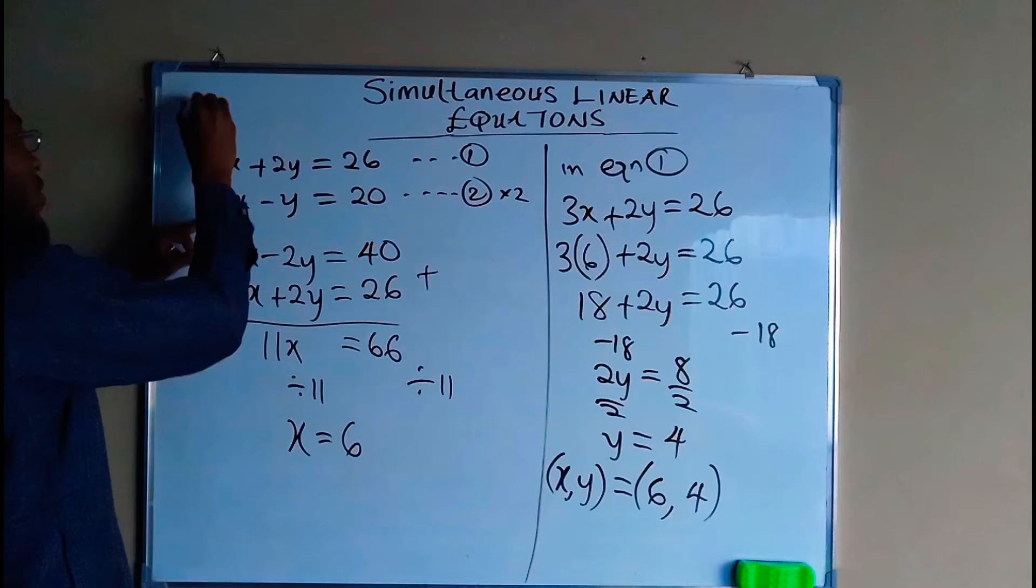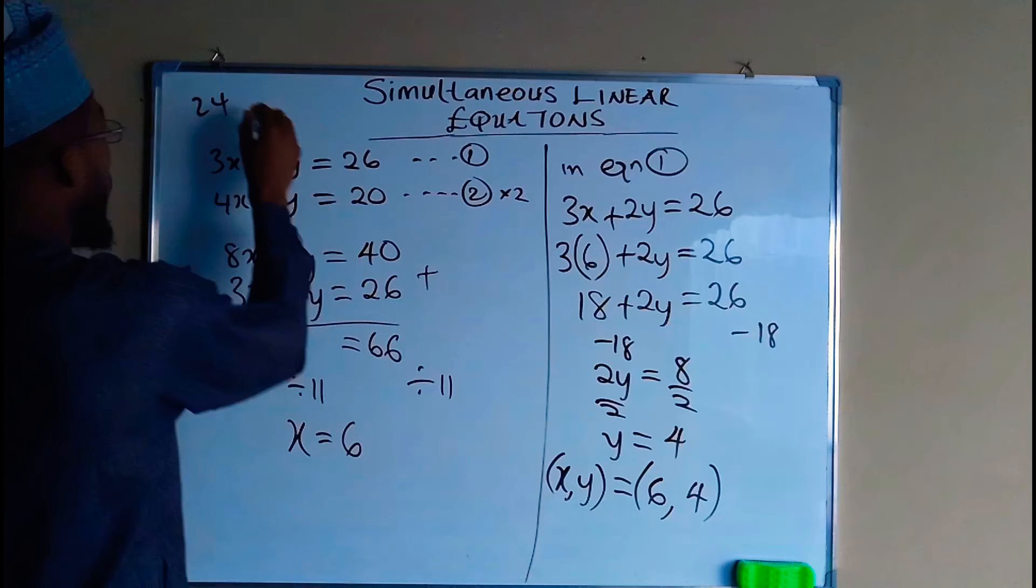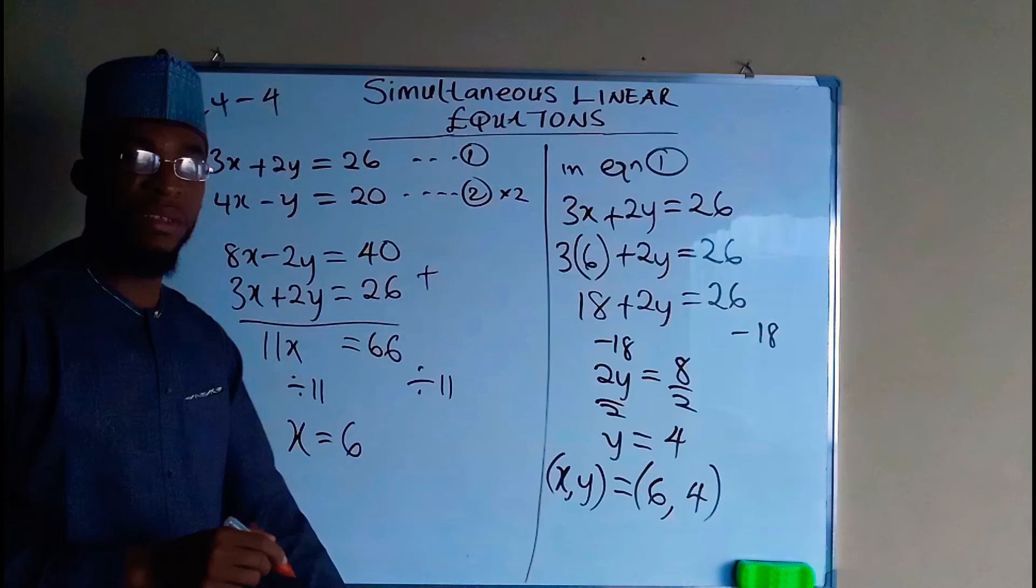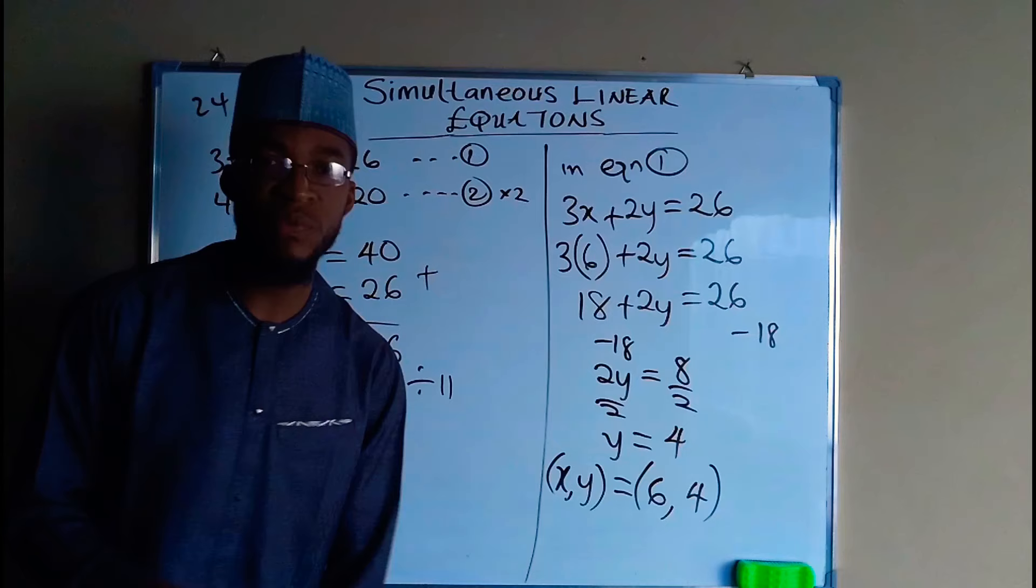And when y is equal to 4, you are going to subtract 4 and 24 minus 4 is equal to 20. Hence the values of x and y are 6 and 4 respectively. Thank you for watching.